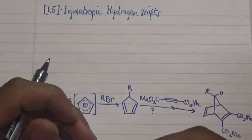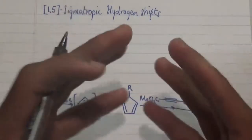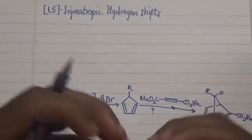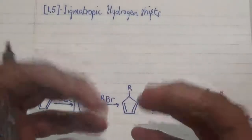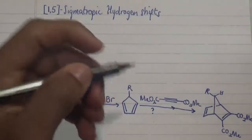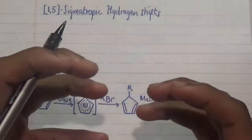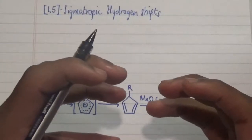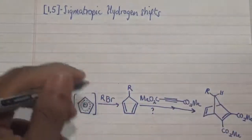Now this is quite different because here we are looking at the migration of a group around a conjugated system, and this actually results in a transition state with a six-membered ring. So let's look at this particular structure and how we can identify when a particular compound is about to undergo a 1,5-sigmatropic hydrogen shift.